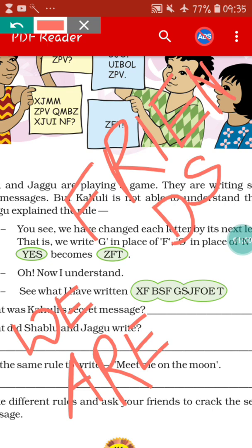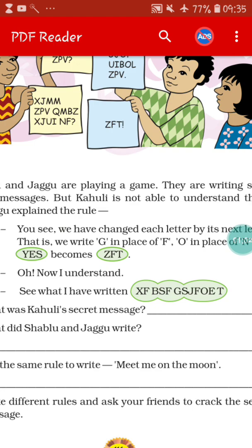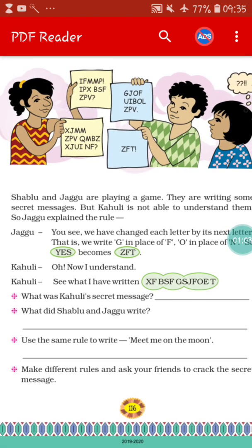It is very easy and very interesting. Next, what did Shablu and Jaggu write? Use the same rule — using the next alphabet — to write 'meet me on the moon.' You will find out what the secret message will be and do it on your own.